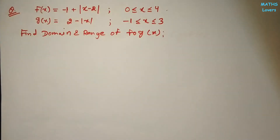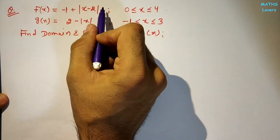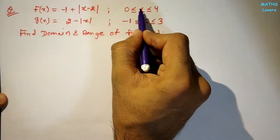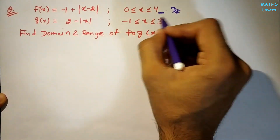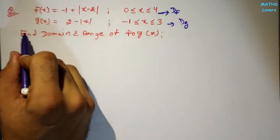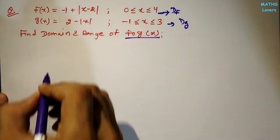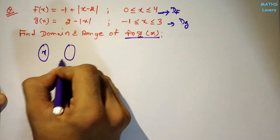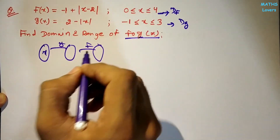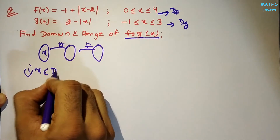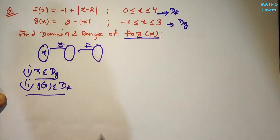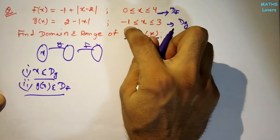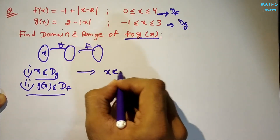Let's see the first problem. f(x) = -1 + |x - 2| with domain x ∈ [0, 4], and g(x) = 2 - |x| with domain x ∈ [-1, 3]. We need to find the domain and range of f∘g, i.e., f(g(x)). The flow is x → g → f. The first condition: x should belong to the domain of g, so x ∈ [-1, 3].